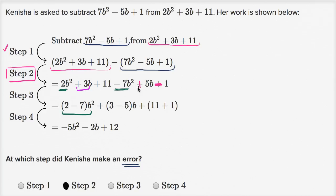It should be 3b plus 5b if she distributed the negative sign right. But since she didn't distribute the negative sign right, she has 3b minus 5b. And it should be 11 minus one.